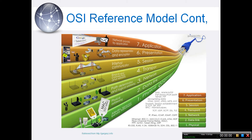Layer 2 is the data link layer. At this layer, data packets are encoded and decoded into bits. It furnishes transmission protocol knowledge and management, and handles errors in the physical layer, flow control, and frame synchronization. The data link layer is divided into two sub-layers: the Media Access Control (MAC) layer and the Logical Link Control (LLC) layer. It provides directly connected host-to-host data transfer and defines the higher-level structure of data, or frames, for the network.